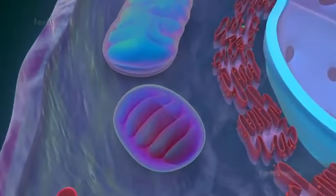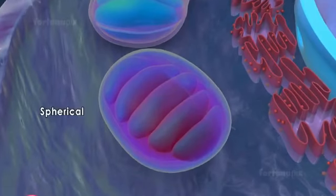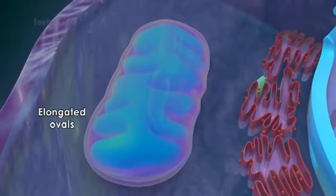Mitochondria vary in shape from almost spherical to elongated ovals.